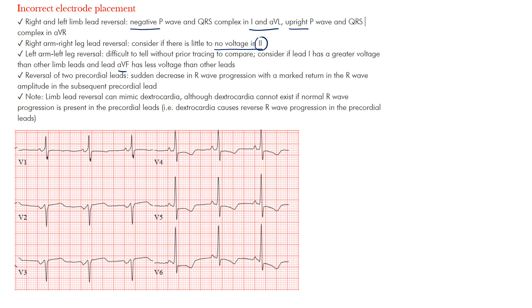Now how about reversal of two precordial leads? What do we see here? Well, what we'll see is a sudden decrease in the R wave progression with a marked return in the R wave amplitude in the subsequent precordial leads. And actually we have an example here. So let's look at this reversal in the precordial lead. So notice we have V1, V2, V3, V4, V5, and V6.